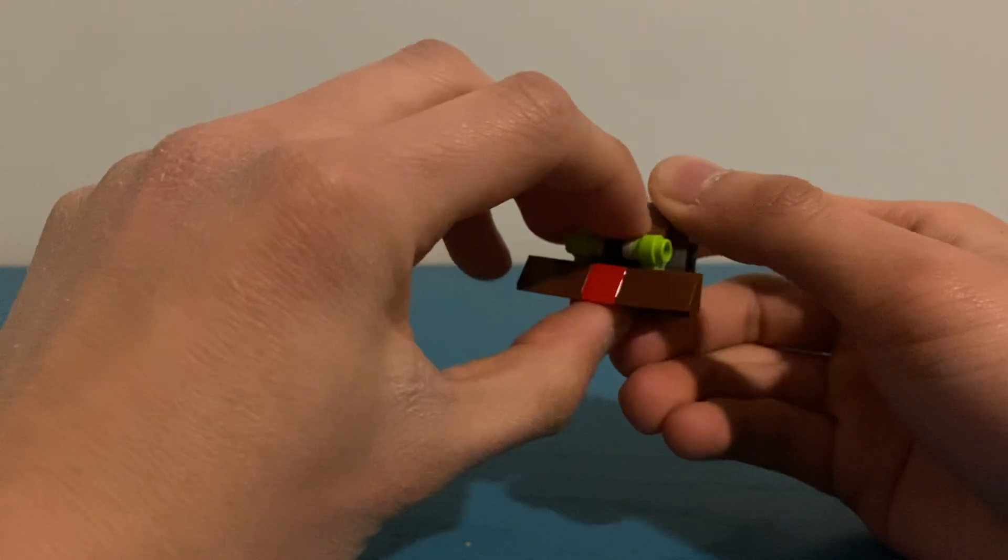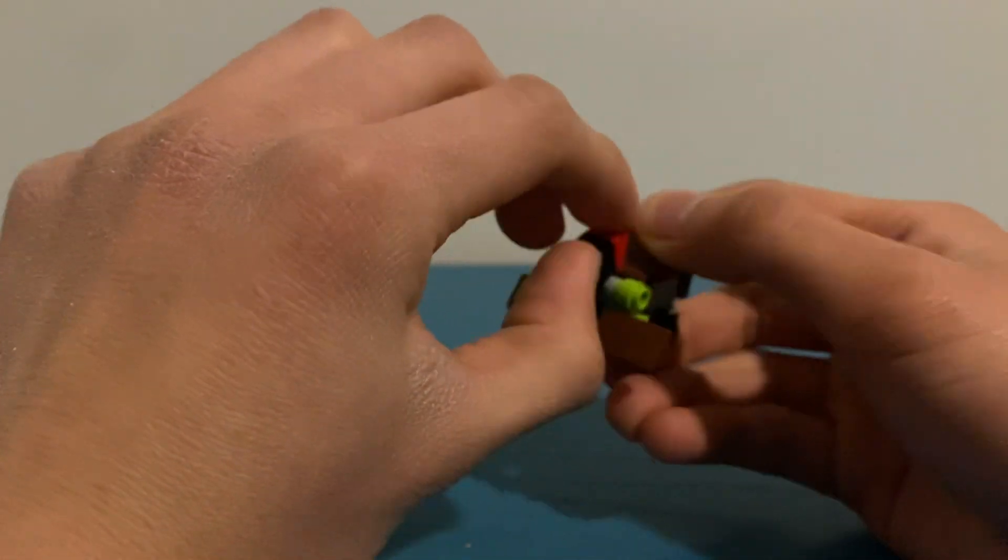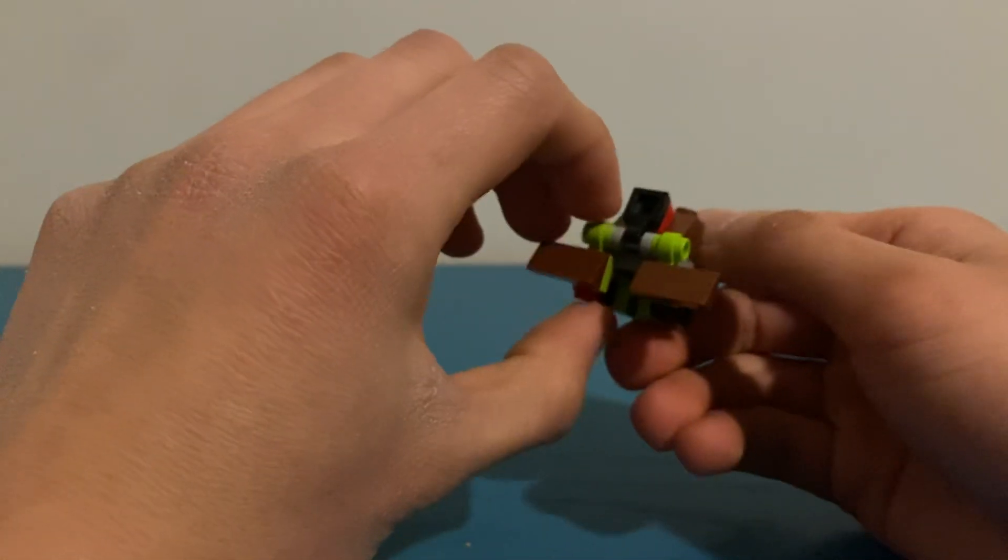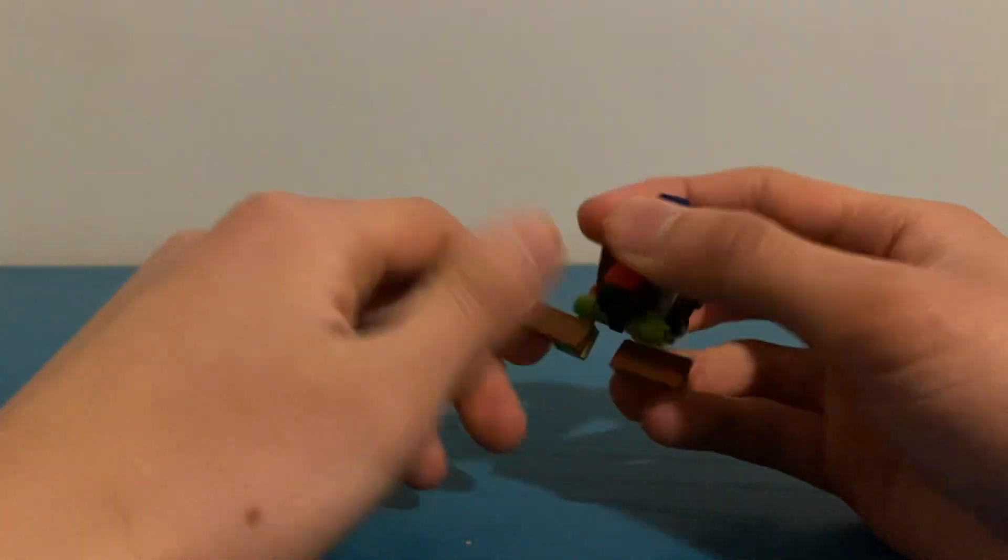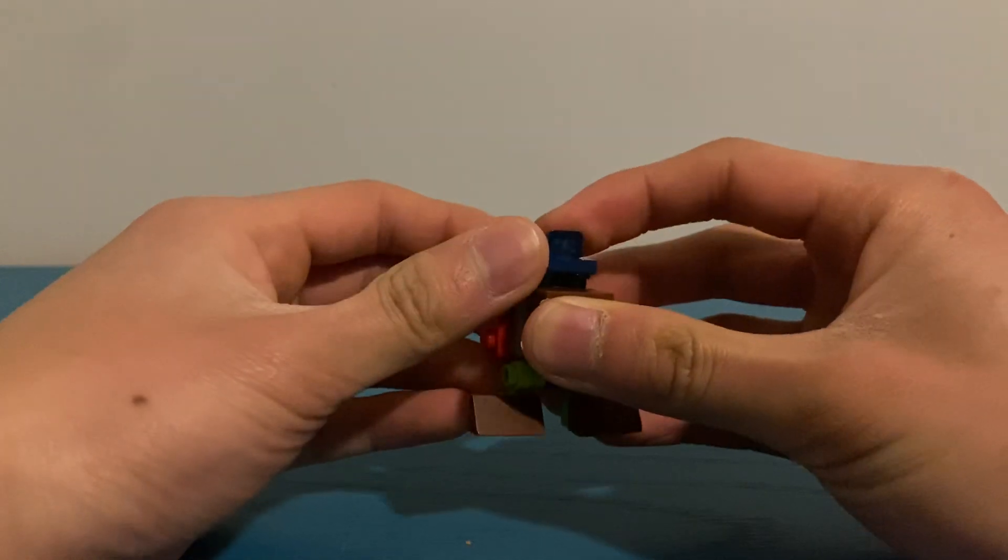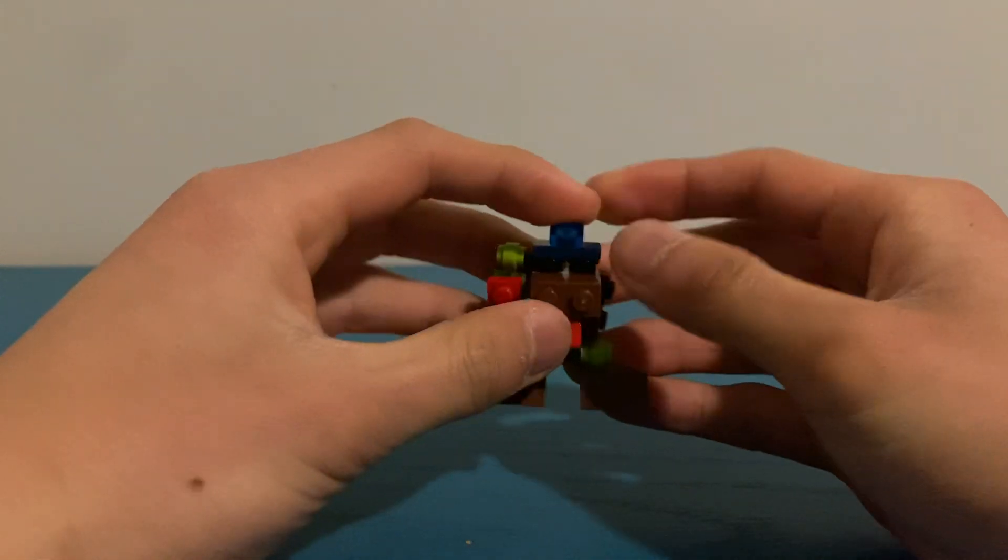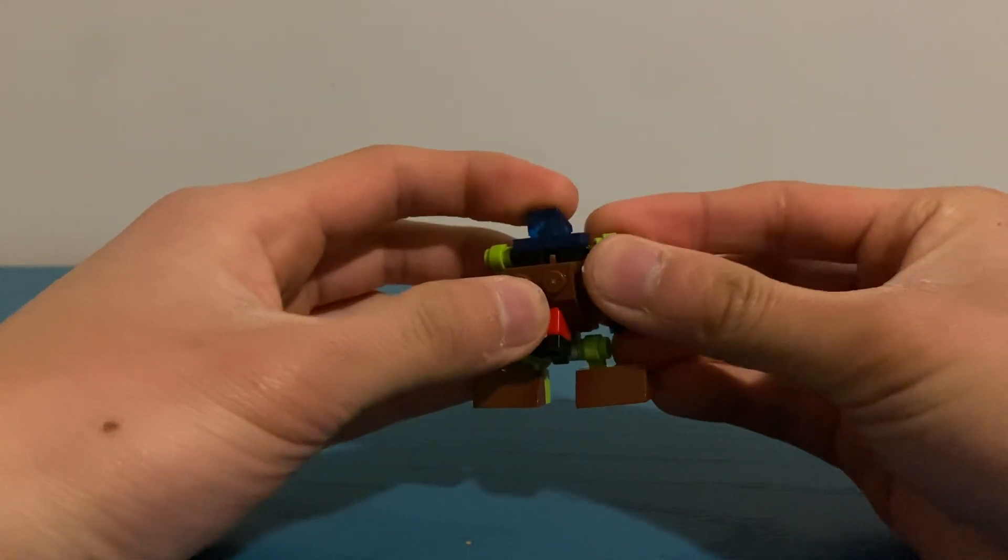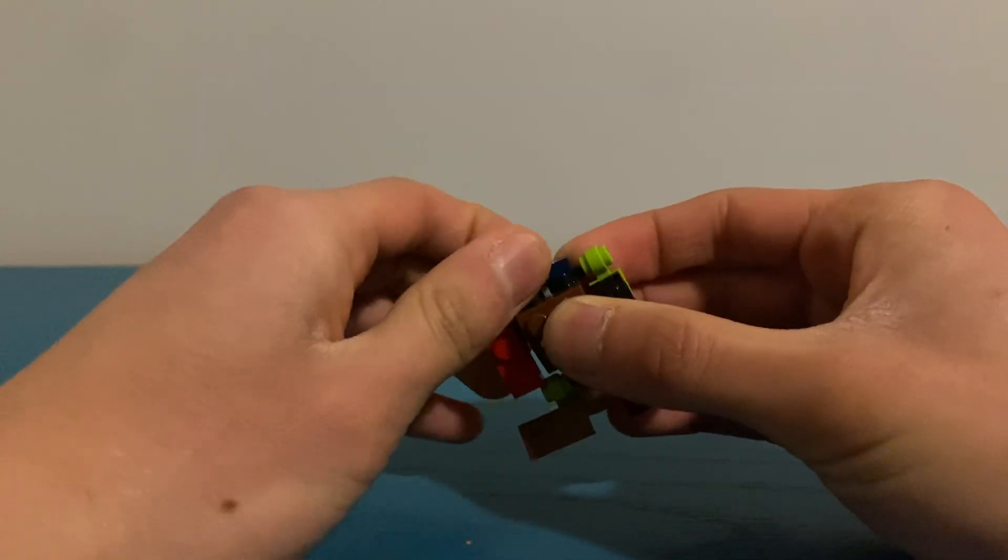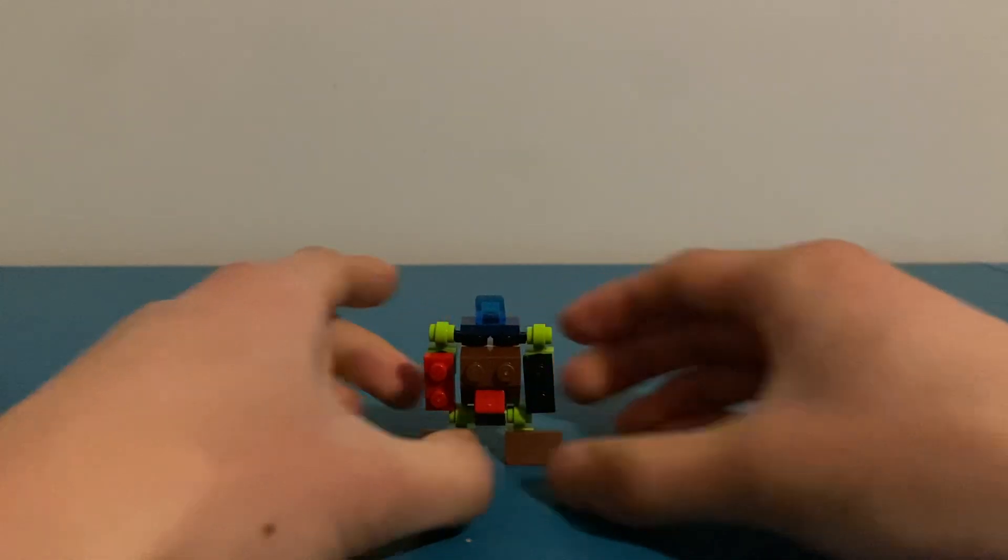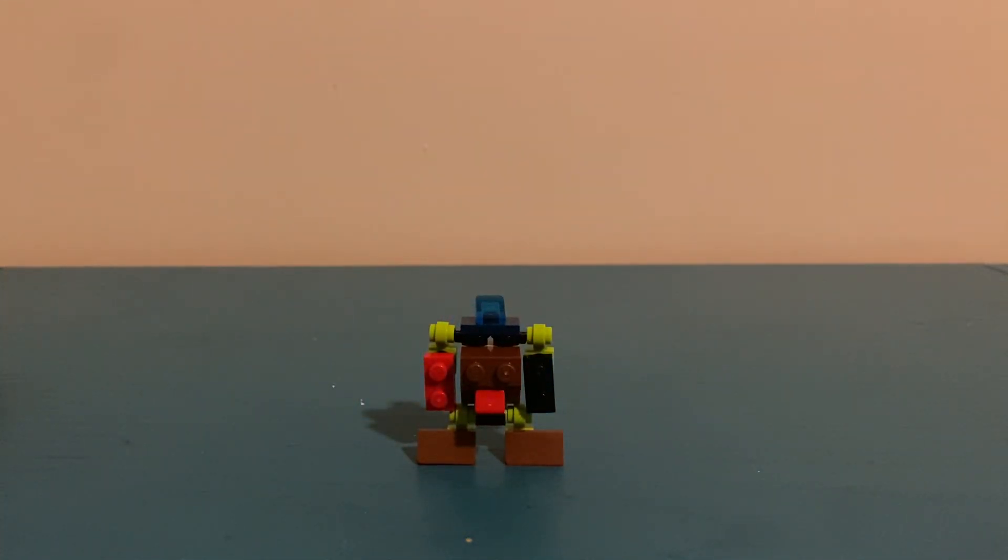So, to transform them, fold this middle shovel up. And then bring up the legs. And then we bring in the arms forward and rotate the head. So, here is Pusher in robot mode.